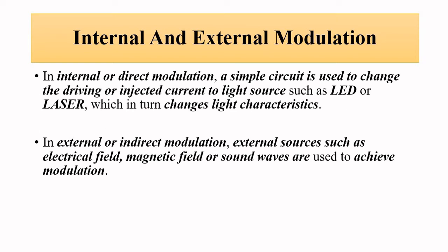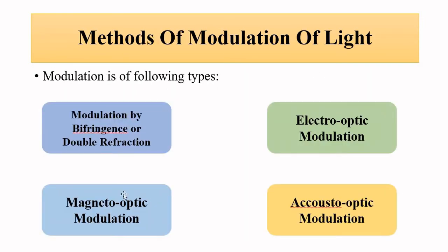Here we will focus our discussion on external or indirect modulation. This involves using external agents after the light has left the source to alter its characteristics — amplitude, frequency, phase, or polarization. The upcoming videos will cover these external modulation techniques.